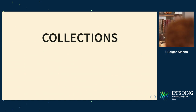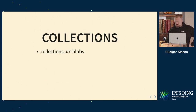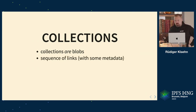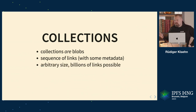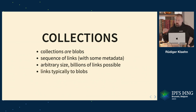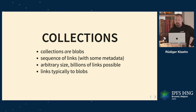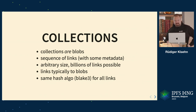Then we have a concept called collections — the smallest thing we could come up with to combine multiple blobs. A collection is a blob; we only have blobs. A collection can be thought of as a sequence of links with some metadata. Just like a blob, a collection can be as big as you want — even a billion links is no problem. Typically links go to blobs; currently we just have a two-level hierarchy. A collection contains blobs, and that's it. No DAG, no problem.